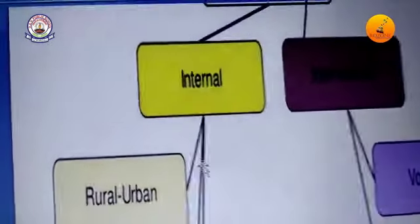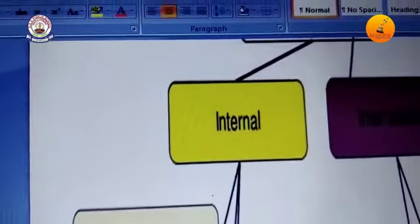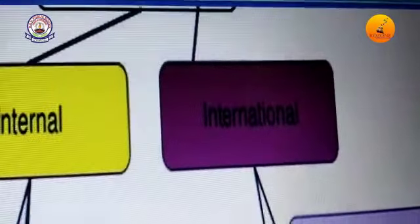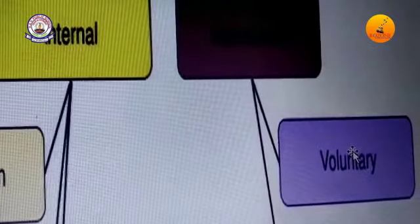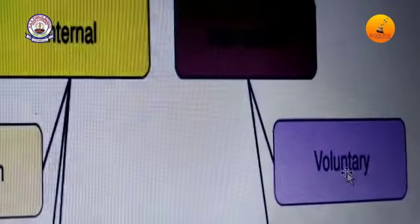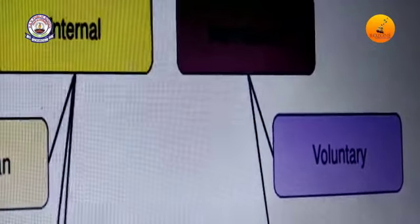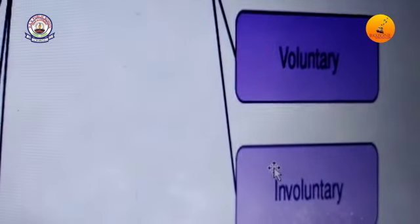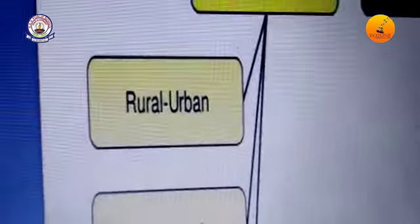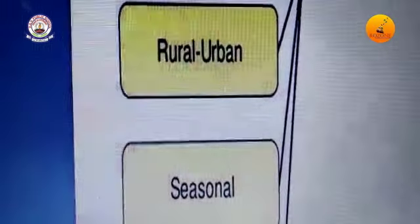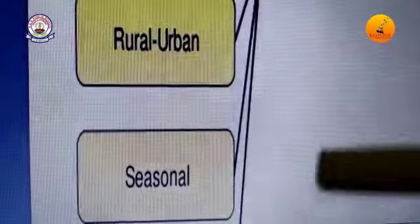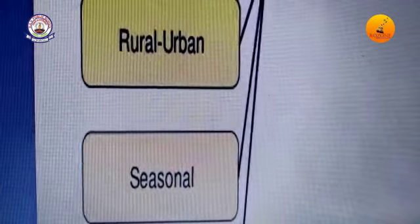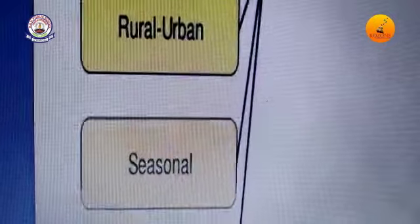So internal — inside the country itself — people migrate to rural areas or urban areas. Internationally, many people voluntarily go by their own choice or wish to some foreign countries. Involuntarily, sometimes they have to go even if they are not interested — they don't have a choice. Then there is seasonal migration, due to some change in seasons or disastrous seasonal effects like floods, which forces people to move to a new place.